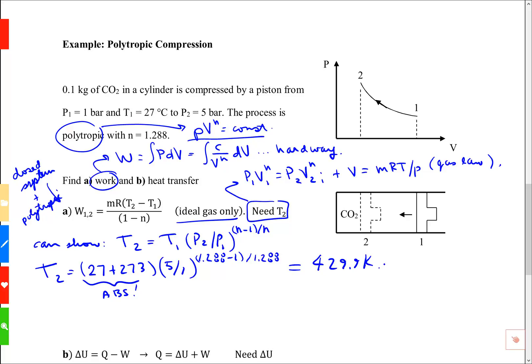Then we can use this work relationship to get the work from 1 to 2. It's going to be the mass, we're told it's 0.1 kilograms. The specific gas constant is the universal gas constant, 8.314 divided by the molecular weight of carbon dioxide, which is 44.01.